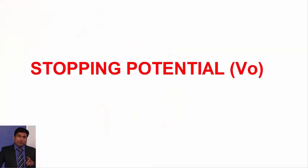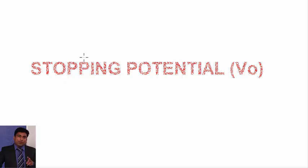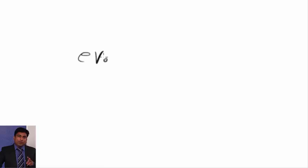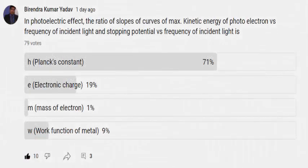That means stopping potential is able to stop electron with maximum kinetic energy. So the equation which we can write is e V0 is equal to kinetic energy max. Now what is our question? We have to find the ratio of slopes of curves, maximum kinetic energy of photoelectron versus frequency of incident light and stopping potential versus frequency of incident light.